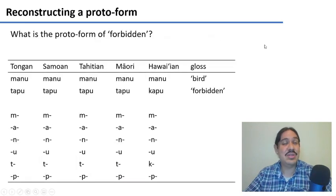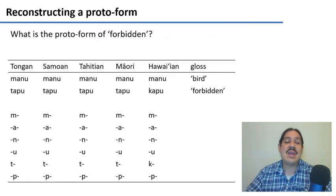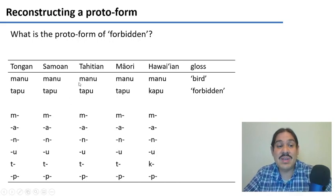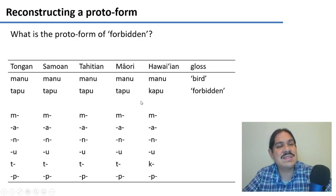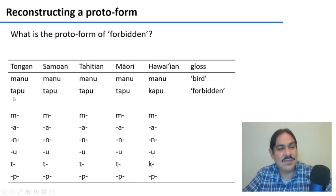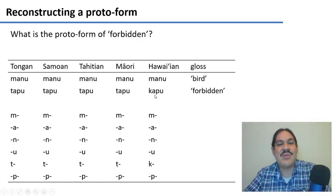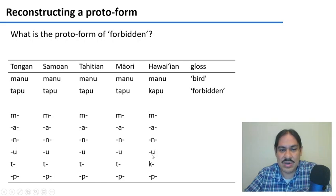Let's make things a little bit more interesting. How about this word: Tapu, Tapu, Tapu, Tapu, Tapu — it means 'forbidden' in these languages. What are the sound correspondences? The very first sound is a T for all of them, but not all of them — Hawaiian has a K where the others have a T. So you can see T, T, T, T, K. The P is the same for all of them in the middle.